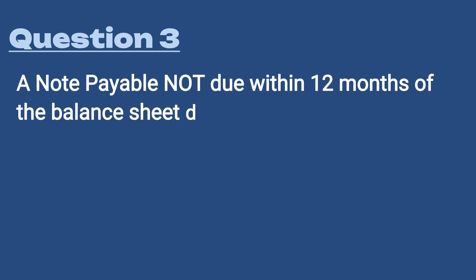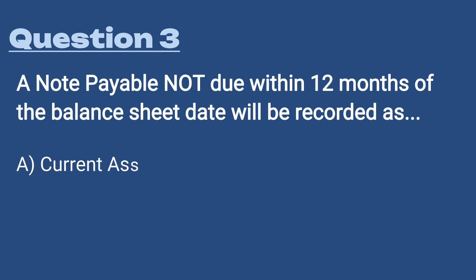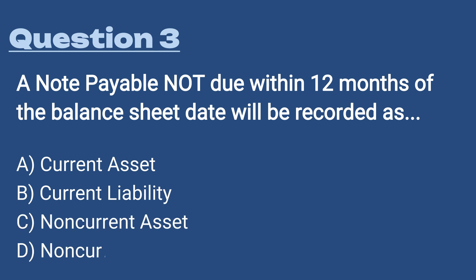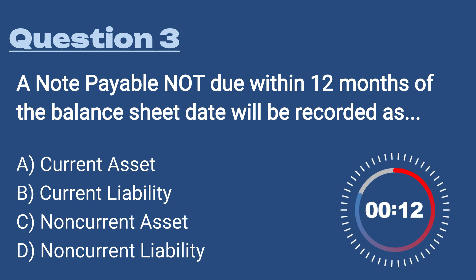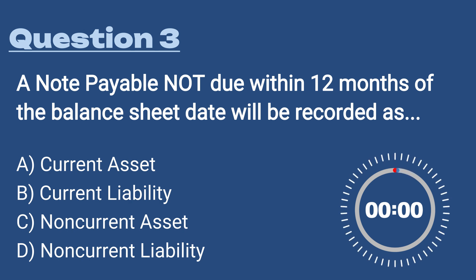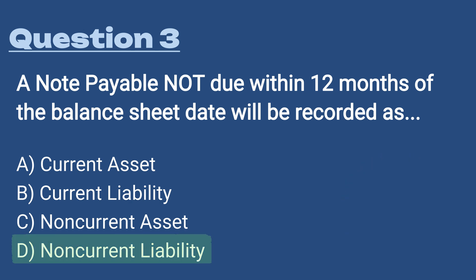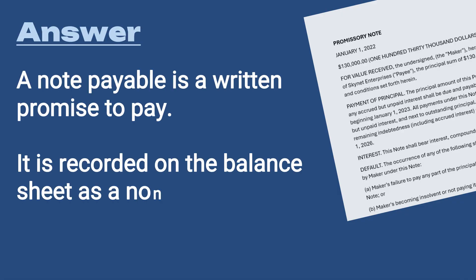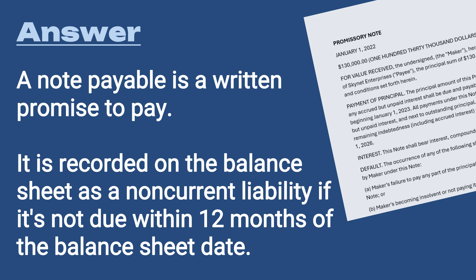Question 3: A note payable not due within 12 months of the balance sheet date will be recorded as: A) A current asset, B) A current liability, C) Non-current asset, D) Non-current liability. The answer is D, non-current liability. A note payable is a written promise to pay — a promissory note from a legal standpoint. It is recorded as a non-current liability if it's not due within 12 months of the balance sheet date.